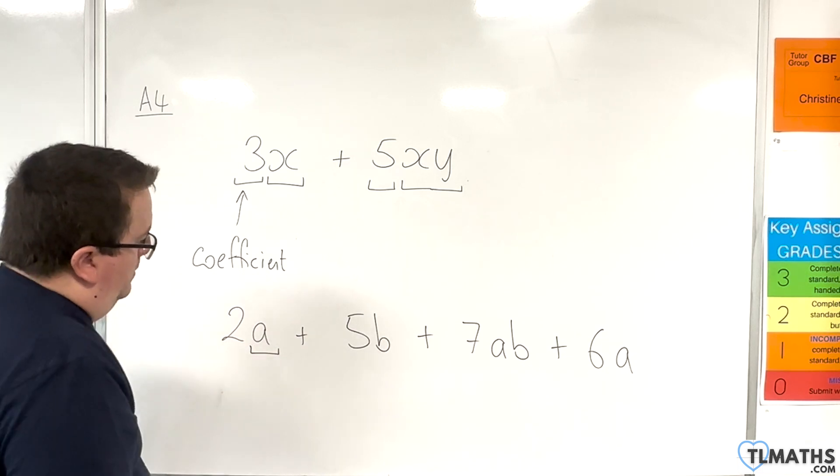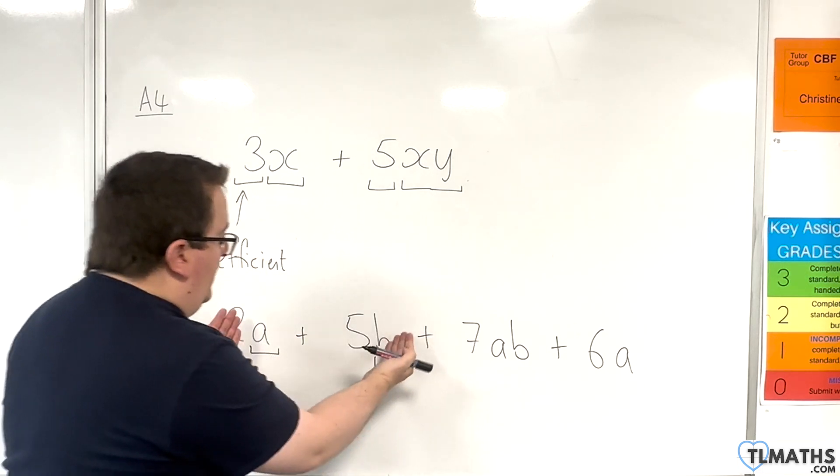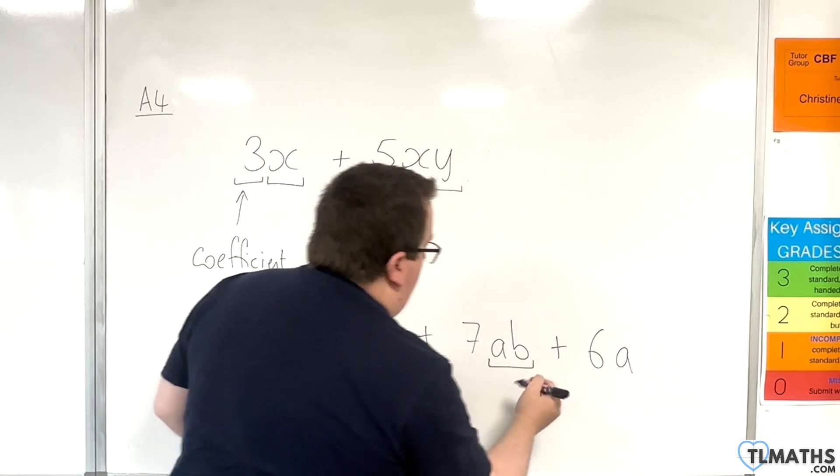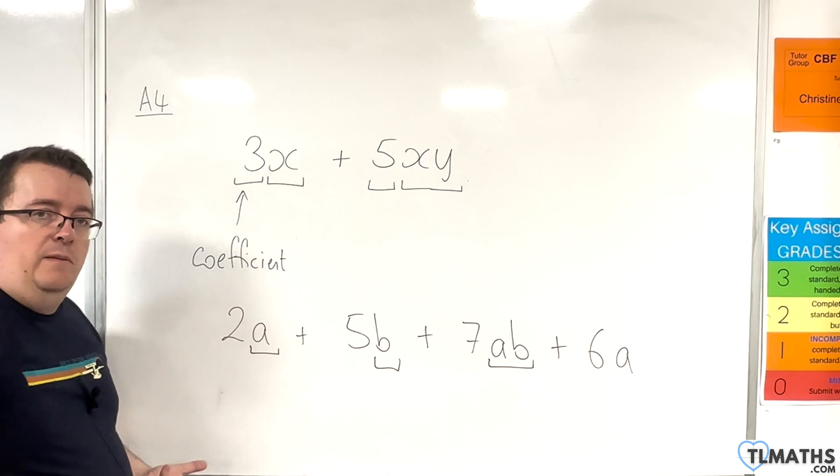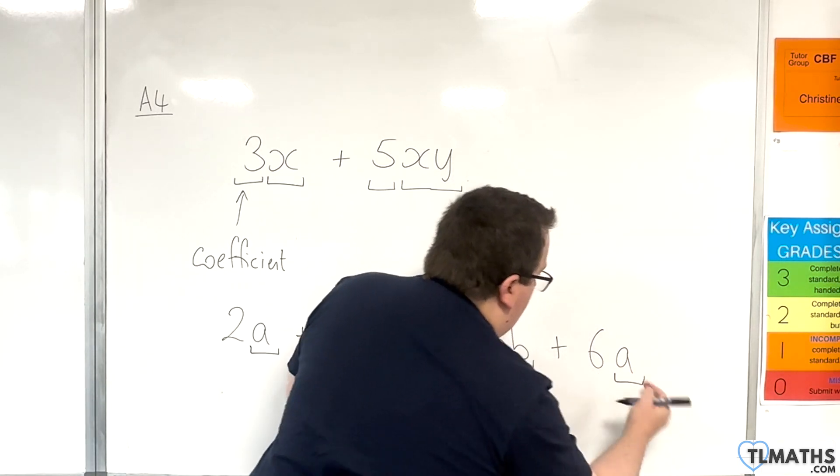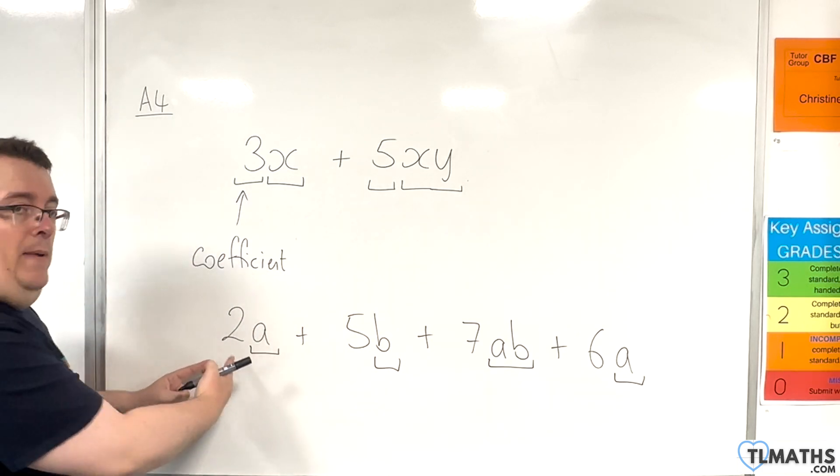So here it's a. Here it's b, so we can't combine those two because they're different. Here it's ab, which is different to b, which is different to a, so we can't combine that either. But then the last term here is a, and I've got an a back here.